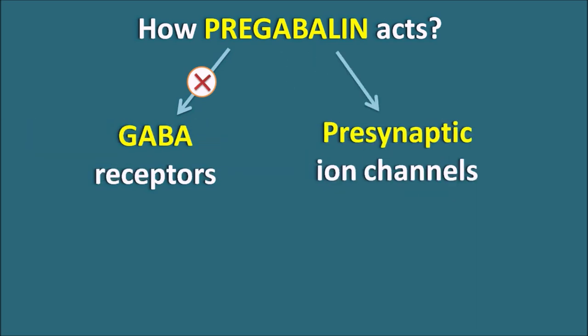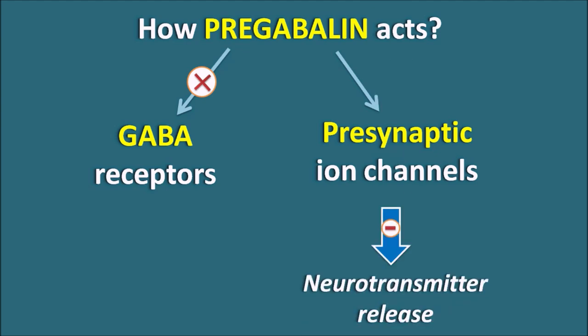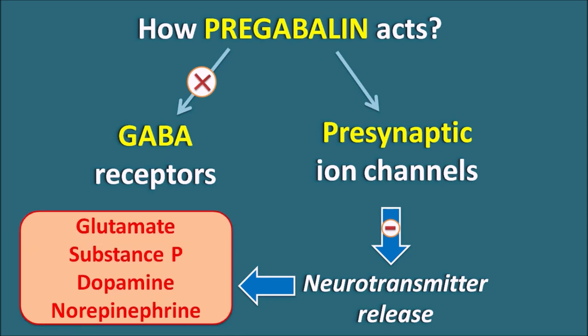Pregabalin acts on presynaptic ion channels, particularly the calcium channels. It acts on a modulatory site at the calcium channels, thereby inhibiting neurotransmitter release. In this way, pregabalin can inhibit the release of many types of neurotransmitters — it can affect the release of glutamate, substance P, dopamine, and norepinephrine. All these are important excitatory mediators which produce neuronal excitation. Pregabalin can inhibit neuronal excitation by inhibiting neurotransmitter release.